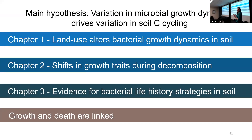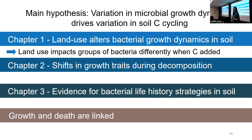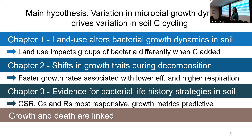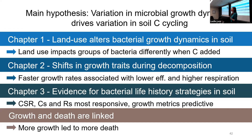To wrap up, from chapter one I found that land use impacts different groups with differing growth rates differently when I add carbon — there's nuance when thinking about strategies in soil. In chapter two, I found that faster growth rates were associated with lower efficiencies and higher respiration. In chapter three, I found evidence for CSR-like strategies in the soils, and that the competitors and ruderals were most explanatory for community composition and carbon cycling differences. And finally, I found that more growth led to more death. Thank you for listening.